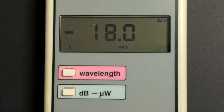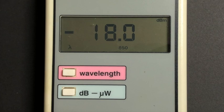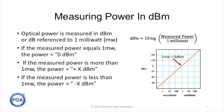Here you can see the actual meter making the measurement. 16 microwatts becomes minus 18 dBm. So optical power is measured in dBm, or dB referenced to one milliwatt.